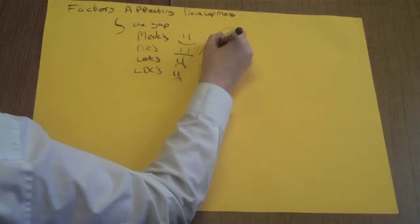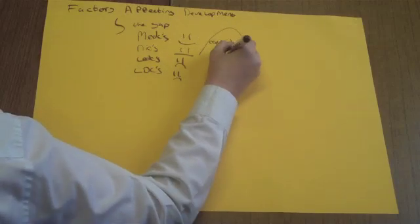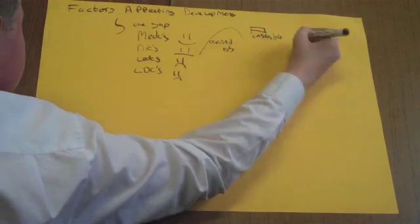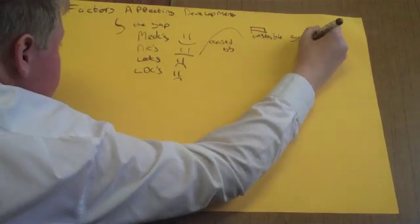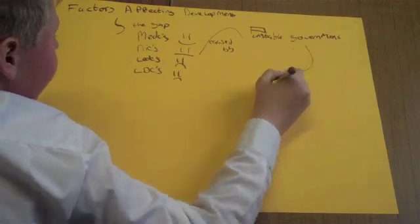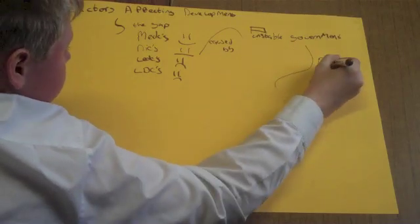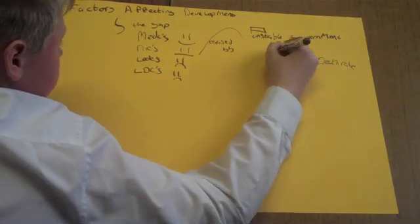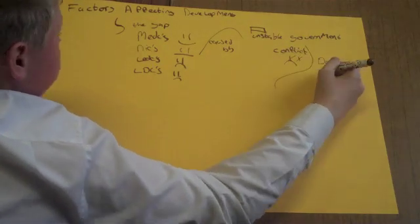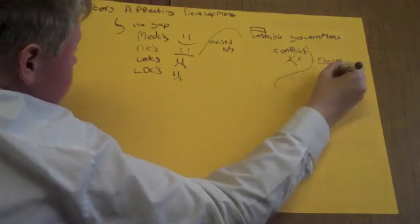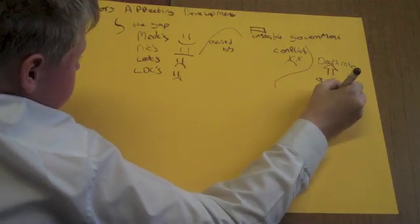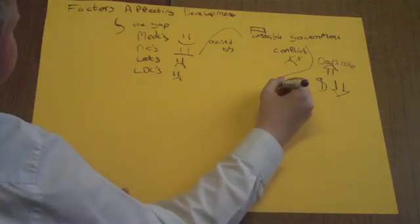The factors that can cause this gap — and the most important — is an unstable government. Without a stable government, there will be no military, which will lead to conflict and piracy. That will then lead to a higher death rate and a lower GDP per capita, which will mean fewer jobs.